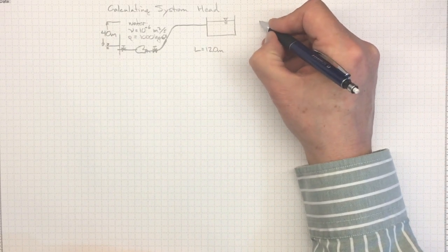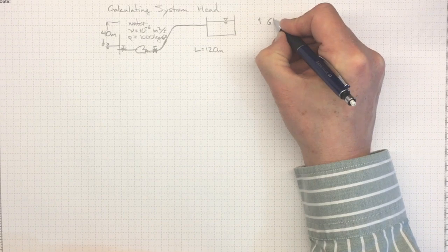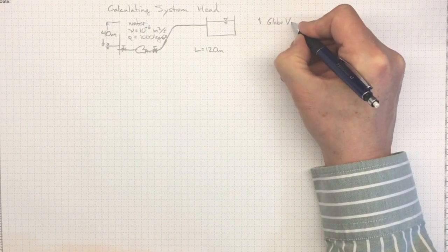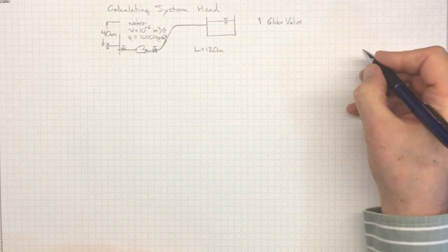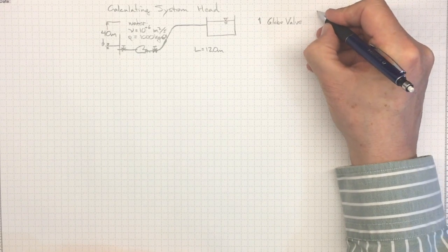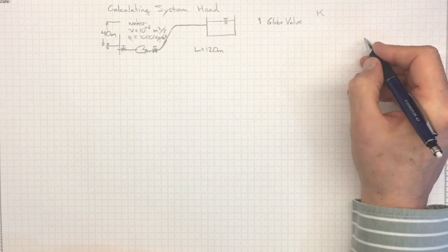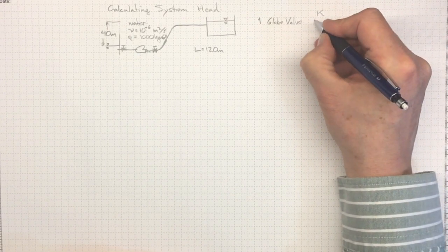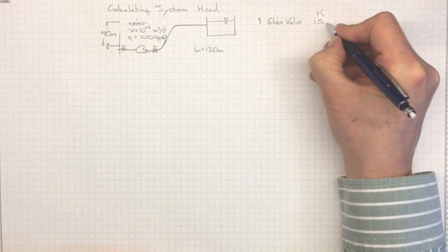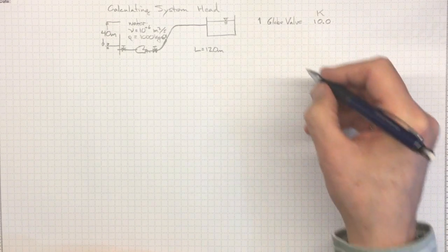Suppose we've got one globe valve for control, and that will have a K factor. I looked it up, and it will depend on which table you look in for which particular brand of globe valve. But I got a value of 10.